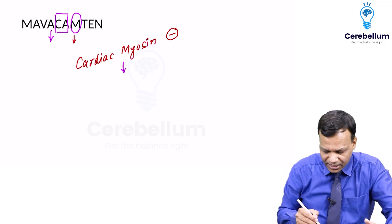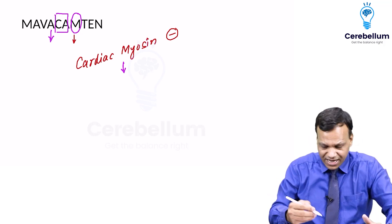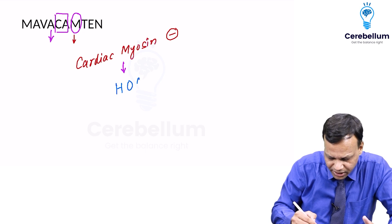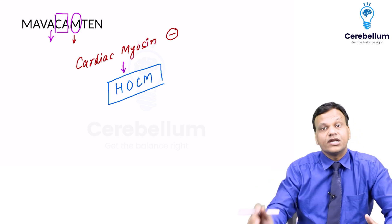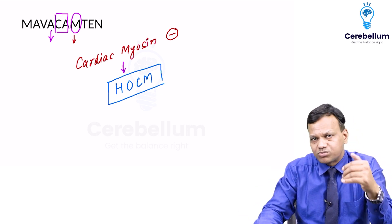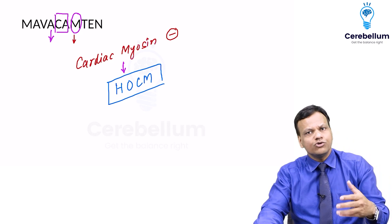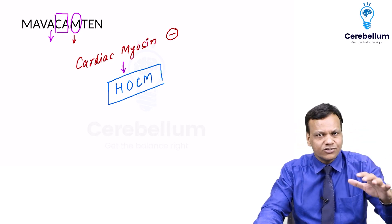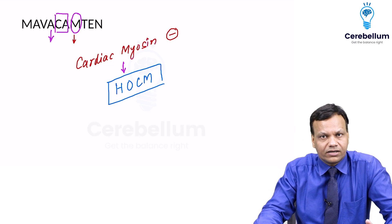Decreased contractility is desirable in hypertrophic obstructive cardiomyopathy, so Mavacemptan is used for that condition. Normally we use beta blockers, which also decrease contractility, but Mavacemptan is a newer drug for this indication.